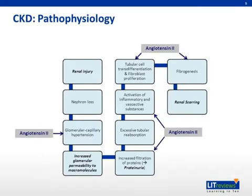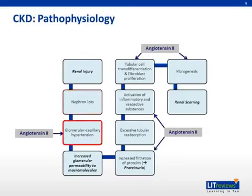The pathophysiology of CKD is complex and multifactorial. In general, the first step involves renal injury due to acute and/or chronic processes such as ischemia, toxic exposures, and obstruction, among many other causes. The injury leads to loss of nephrons, which triggers glomerular capillary hypertension as a compensatory mechanism to maintain overall glomerular filtration by the remaining nephrons. This compensation eventually leads to hyperfiltration, weakening the glomerular membrane and increasing its permeability to macromolecules, including proteins.